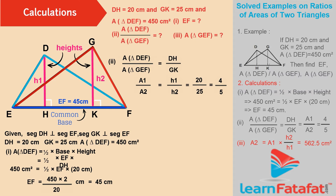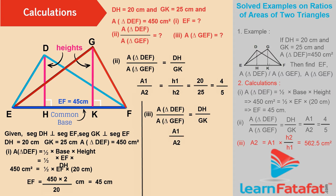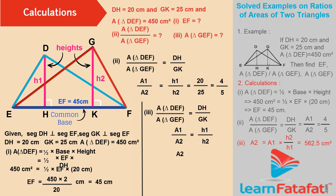Calculation for Area of Triangle GEF. Area of Triangle DEF divided by Area of Triangle GEF is equal to DH divided by GK, or simply A1 divided by A2 is equal to H1 divided by H2. Therefore, A2 is equal to A1 into H2 divided by H1.